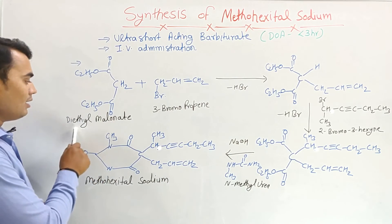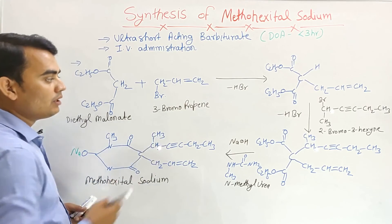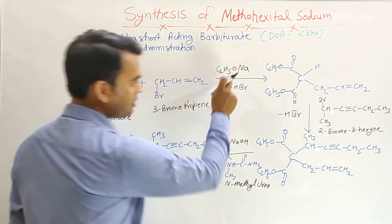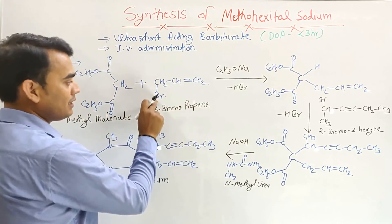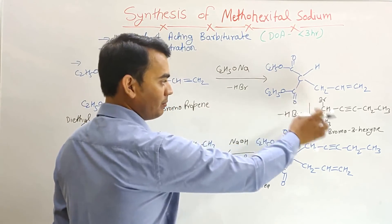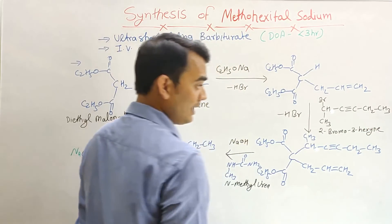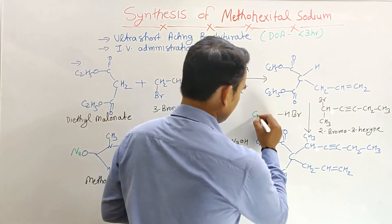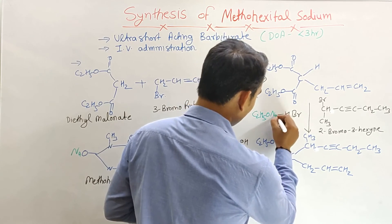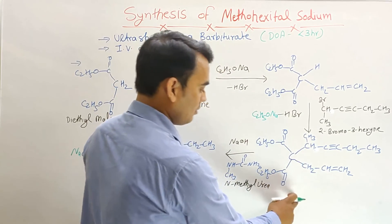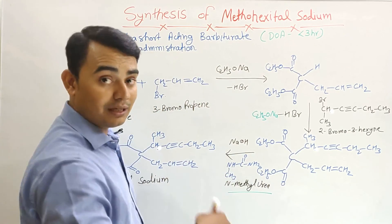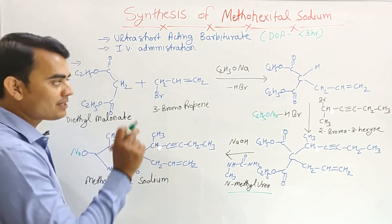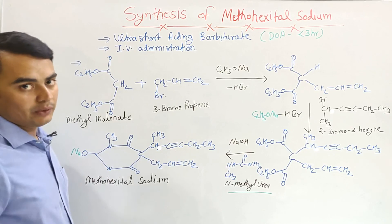So, in summary, the synthesis of methohexital sodium is a 3-step reaction. First, diethyl malonate reacts with 3-bromopropene in the presence of sodium ethoxide (C2H5-O-Na), forming the first intermediate. Second, this intermediate reacts with 2-bromo-3-hexyne, also in the presence of sodium ethoxide. Third, the second intermediate reacts with N-methylurea, cyclization occurs, and methohexital sodium is formed. You just need to remember the starting material — diethyl malonate. Thank you.